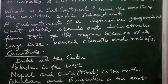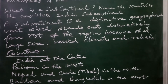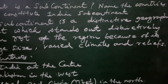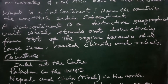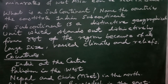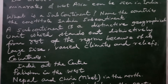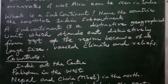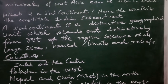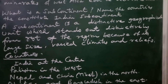Now let us discuss the subcontinent. A subcontinent is a distinctive geographical unit which stands out from the rest of the regions because of its large size, varied climate, and relief features. It means a larger area — a different geographical unit which stands distinctly from the rest of the region due to its large size, different climates, and different relief features.